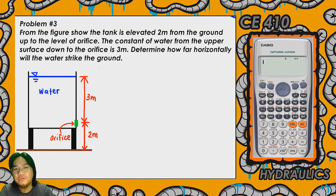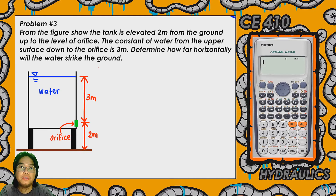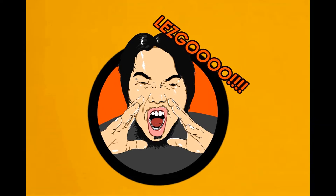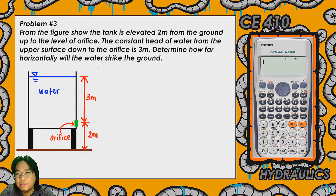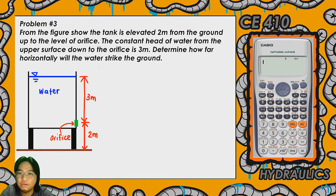Hi, welcome to another video for CE410 or Hydraulics. For this video we're going to be solving another problem regarding orifice. For those who didn't watch my video lecture regarding orifice, kindly watch it — I will put the link in the description below. This is problem number three: from the figure shown, the tank is elevated two meters from the ground up to the level of the orifice, and the constant head of water from the upper surface down to the orifice is 3 meters.